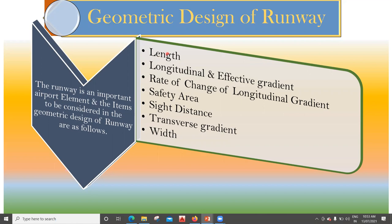The first is the length, which is a very important factor. Then we have the longitudinal and the effective gradient, then the rate of change of longitudinal gradient, then there is safety area, the side distance, transverse gradient, and finally the width. Considering all these things, the geometric design of a runway is established. We'll try to see all these things in detail.